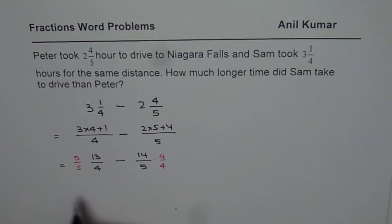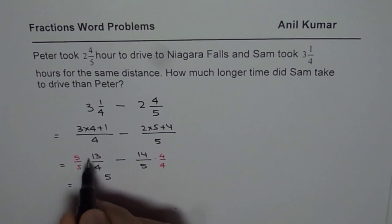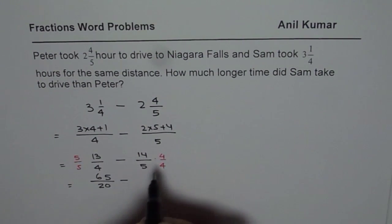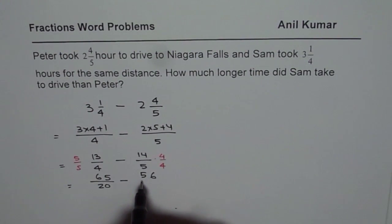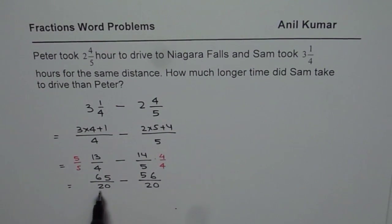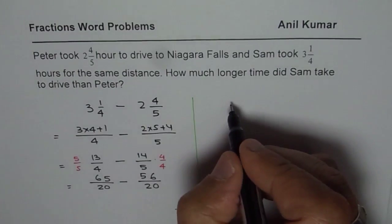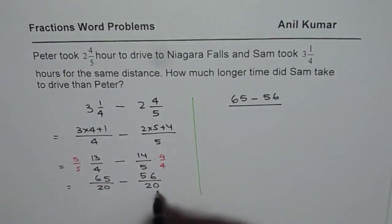So we get the common denominators and now we can write this as 5 times 13, which is 65, over 20, minus 14 times 4, which is 56, over 20. Now we have common denominators and we can subtract the numerators. So we have 65 minus 56 over 20.